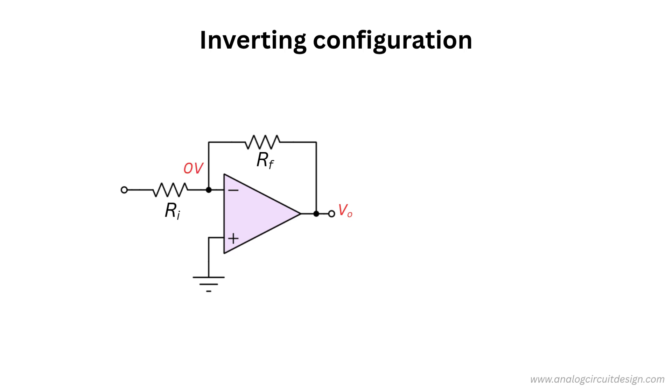If we apply a voltage potential VI at the input, the current VI by RI will flow through RI. Since zero current flows into the inverting terminal of the op-amp, the current flowing through RI will flow entirely through RF.